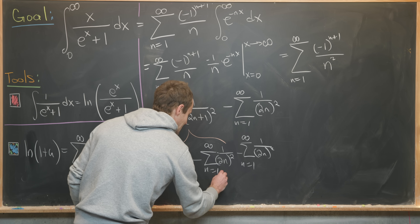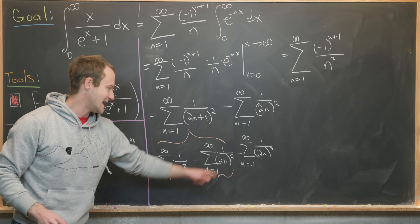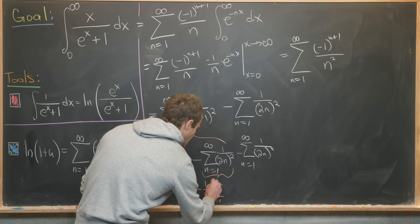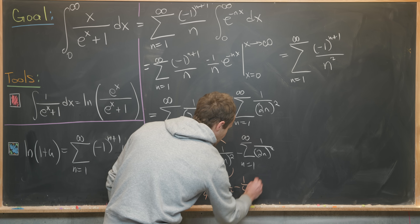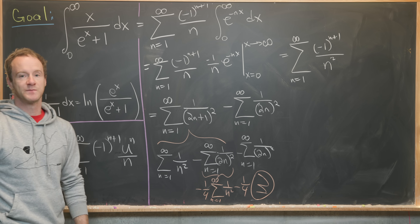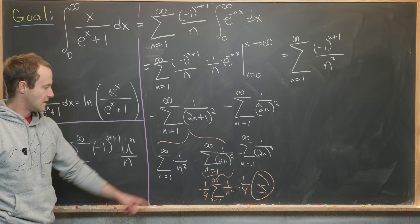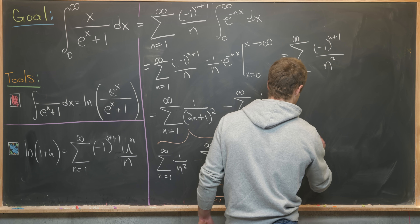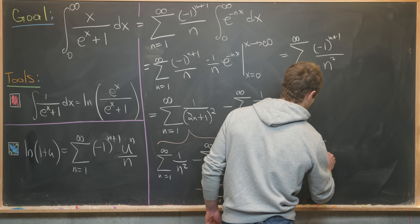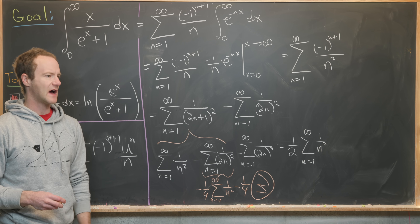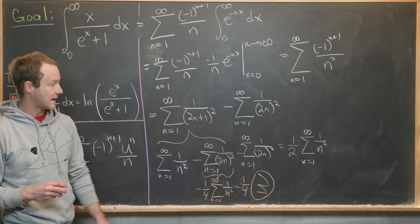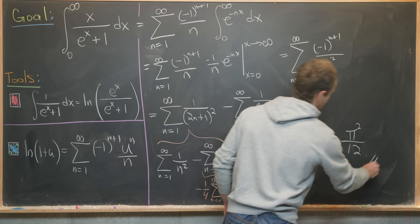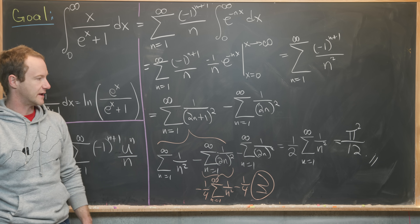Each of the even-term sums can be rewritten by pulling out two squared from the denominator, giving minus one-quarter times the sum of one over n squared. So we have the full sum of one over n squared minus two times one-quarter of it, which equals one-half of the sum as n goes from one to infinity of one over n squared. That's the well-known Basel problem result of pi squared over six, and taking half of it gives us pi squared over twelve — which is our final answer for the integral.